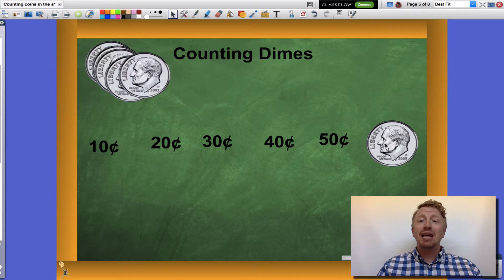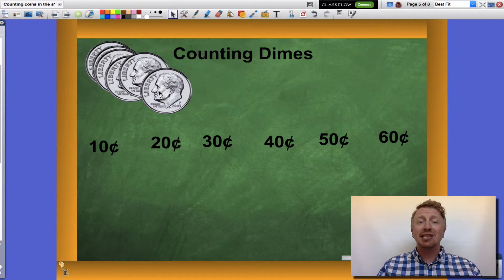fifty cents, and sixty cents. I have six dimes at ten cents apiece for a total of sixty cents. I counted by tens in order to do that.